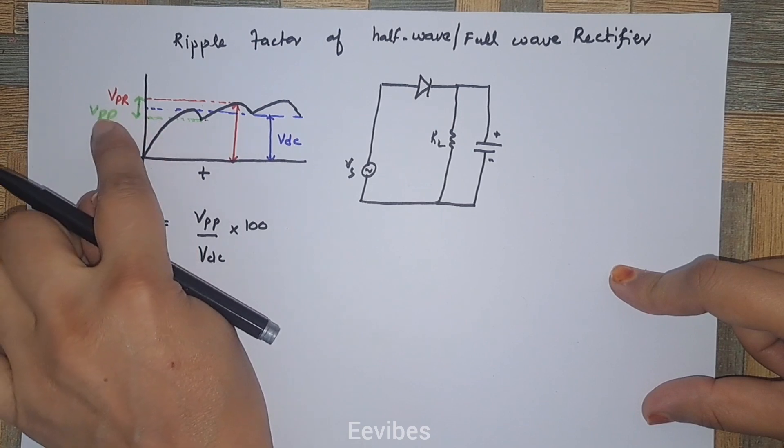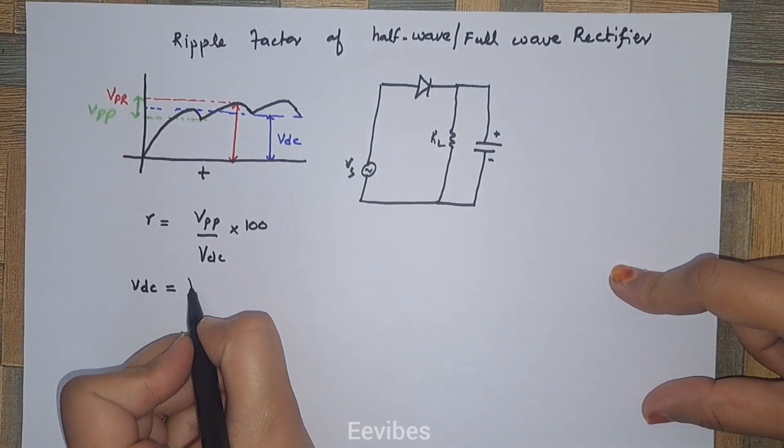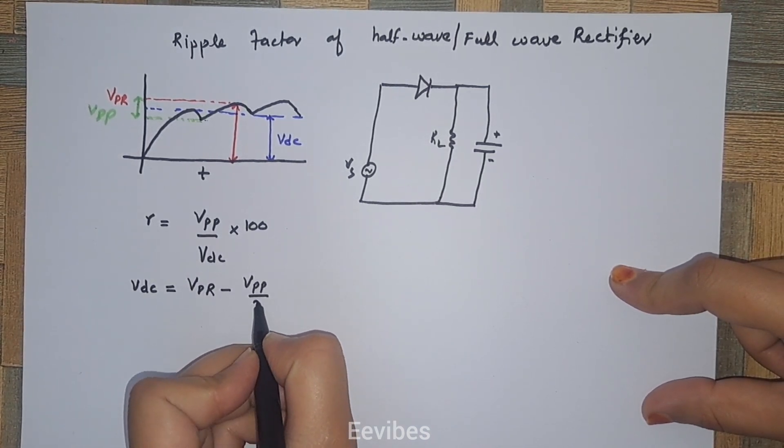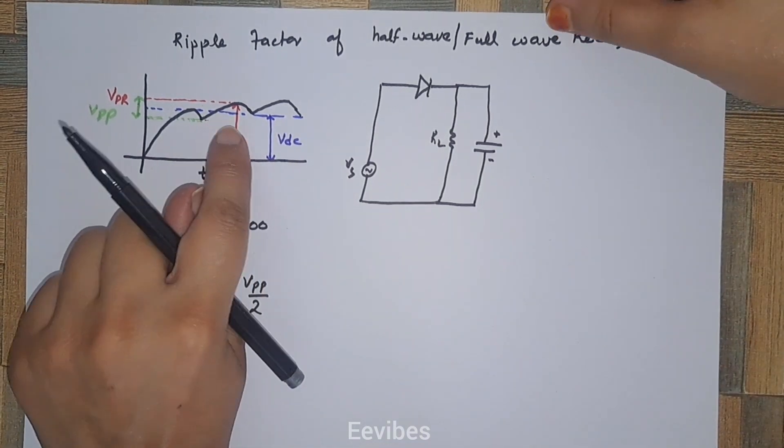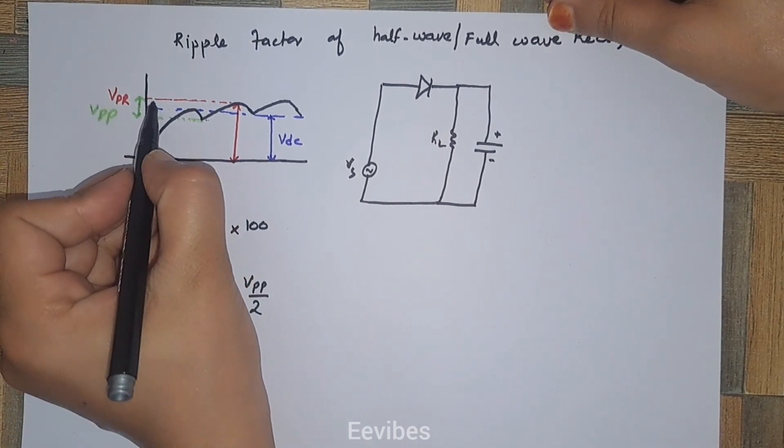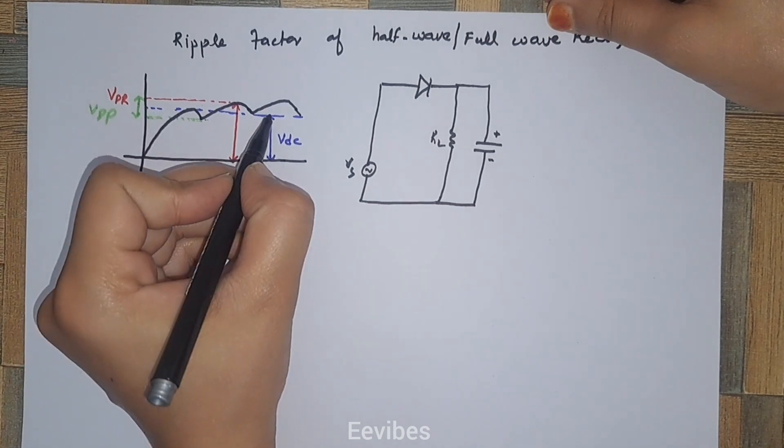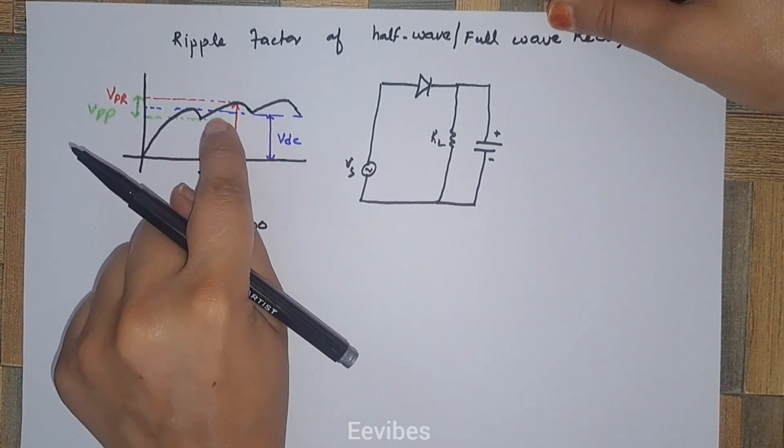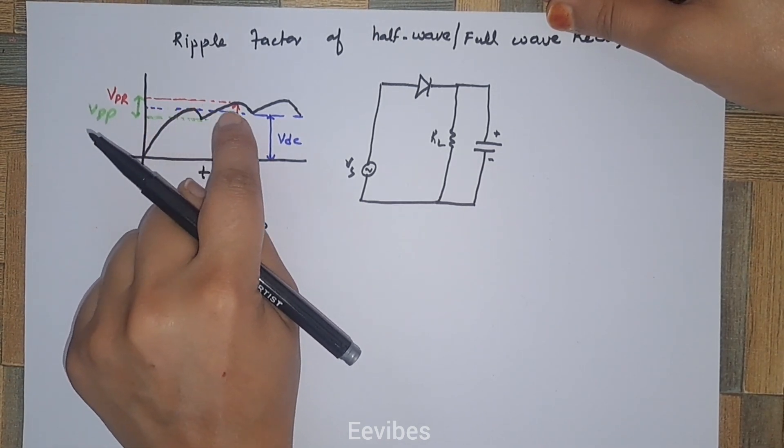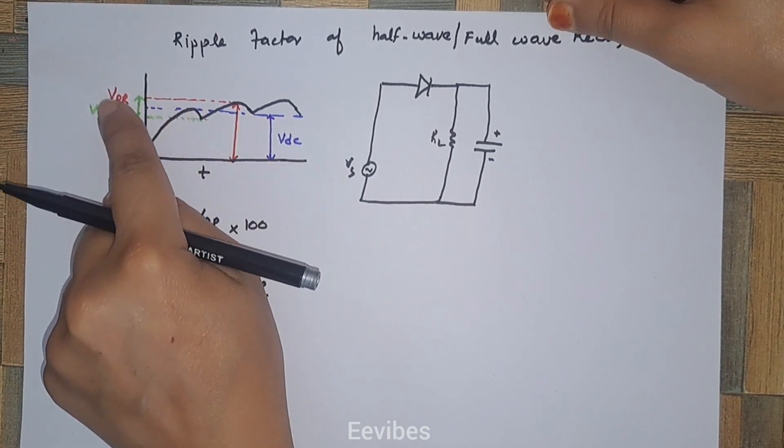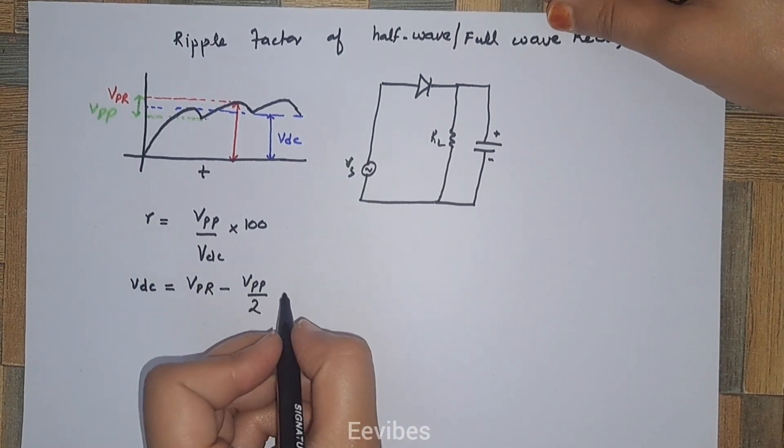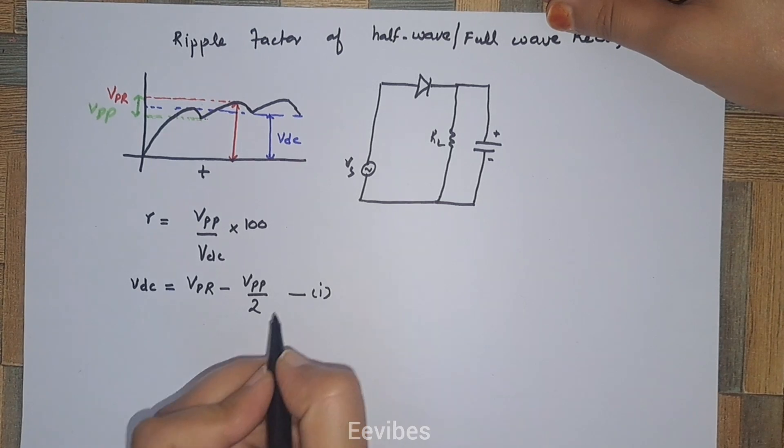We can represent the VDC voltage in terms of the given parameters VPR and VPP like this: VPR minus V peak-to-peak divided by 2. Graphically, VDC lies between VPR and reference ground. If you subtract this portion, you will get VDC from VPR. I have divided VPP by 2 so that half of its voltage waveform is obtained, then subtract it from VPR to get VDC. This is equation 1.